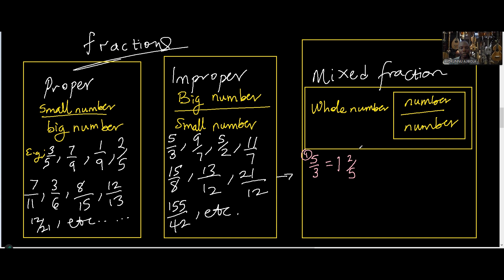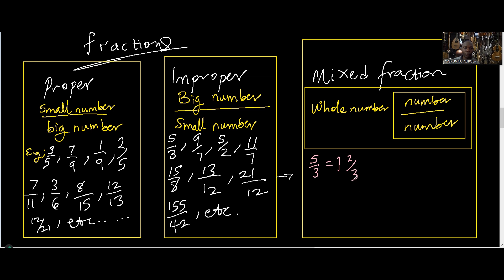Let me do this first one again. We have five over three. If you count five — one, two, three, four, five — how many times can you remove a three? Only one time. How many groups of three are in five? Only one group. What does it remain? Two over three. The number of times you can take away the three is one, and it remains two over three.